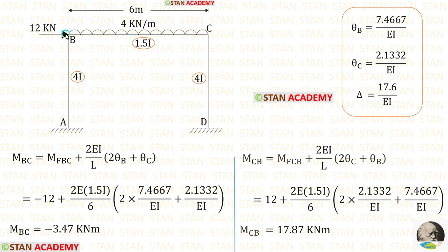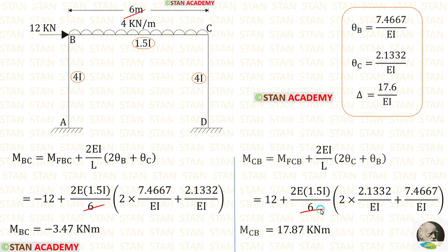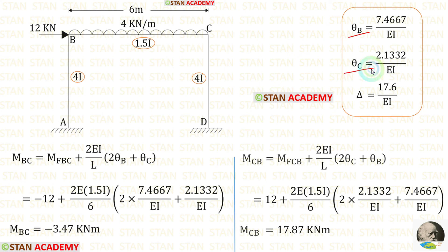Now let us make the slope deflection equations for beam BC. We apply fixed end moments −12 and +12. With L = 6 and moment of inertia 1.5I, after applying the values of theta B and theta C we obtain M_BC and M_CB.